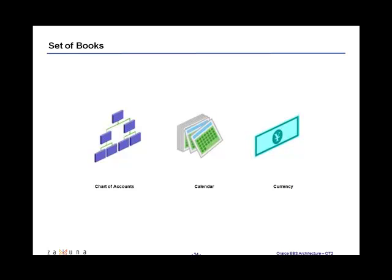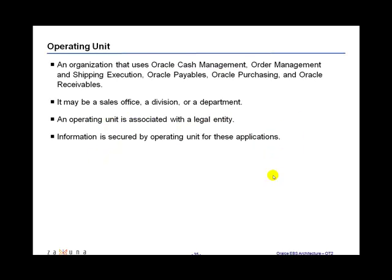We have looked at the set of books and how the chart of accounts, calendar, and currency define the set of books in Oracle apps. We also looked at the operating unit — it's an organization that uses Oracle cash management, order management and shipping, Oracle payables, purchasing, Oracle receivables, etc. It may be a sales office, a division, or a department. An operating unit is associated with a legal entity, and information is secured by operating unit for these applications, meaning the data is associated to that specific org id within the base tables.